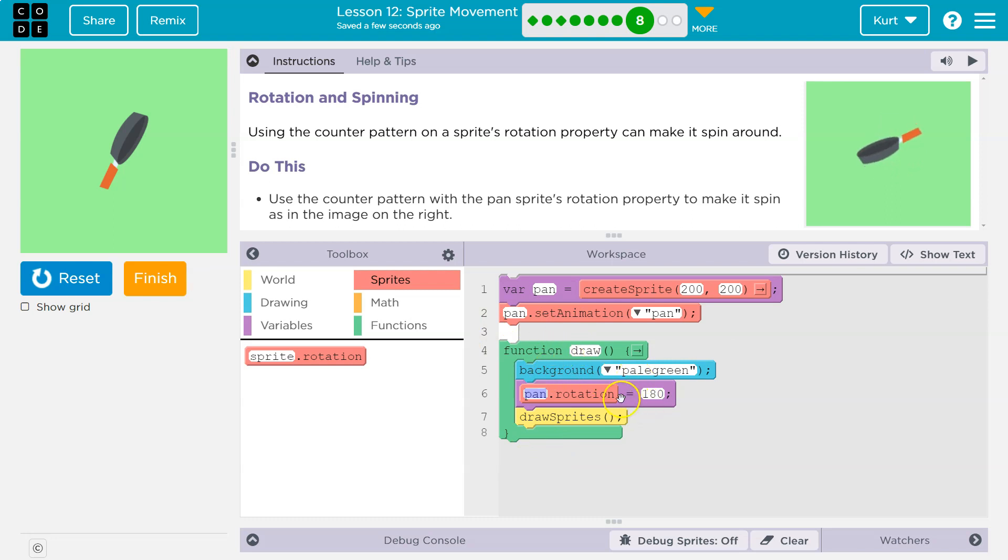Green background. The pan is a foot long. Draw the sprite. Green background. Pan is a foot long. Draw the sprite. Right. We're not changing anything. We're just always saying rotation's at 180 forever. Right. Or pan's at one foot forever. We just say it 30 times a second. We need it to change.